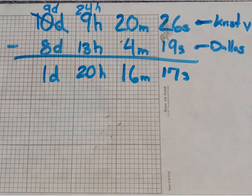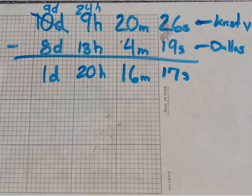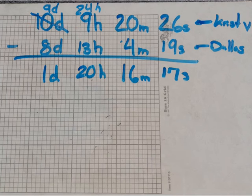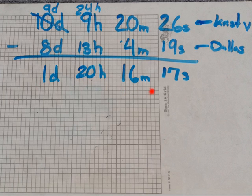To solve question 4, what we're doing is subtracting Christy's time from Dallas' time. Christy's time is 10 days, 9 hours, 20 minutes, and 26 seconds, while Dallas' time is 8 days, 13 hours, 4 minutes, and 19 seconds. First, we're subtracting the seconds: 26 minus 19 gives you 17 seconds. 20 minutes minus 4 minutes gives you 16 minutes. 9 hours minus 13 hours you obviously can't do, so we're borrowing from the days. Now it's 9 days, and 24 hours plus 9 hours equals 33 hours; 33 minus 13 gives you 20 hours, and 9 days minus 8 days equals 1 day. So your answer is 1 day, 20 hours, 16 minutes, and 17 seconds.